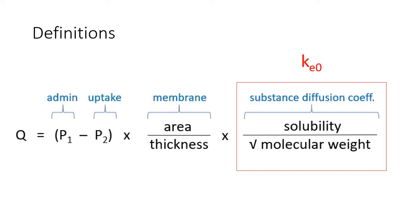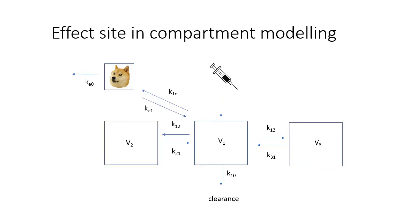You can also think of KE0 as representing those factors which affect the rate of drug transfer between the central compartment and the effect site, independent of the concentration gradient, and independent of the nature of the membranes being crossed. This diagram demonstrates where the effect site fits in the three compartment model.